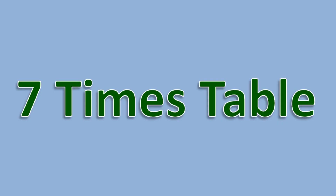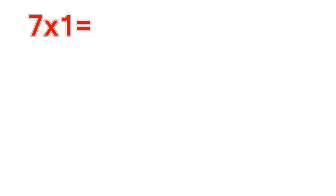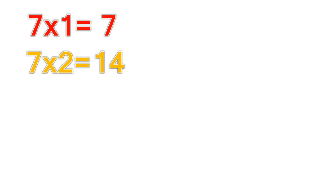7 times table. 7 times 1 equals 7. 7 times 2 equals 14. 7 times 3 equals 21.